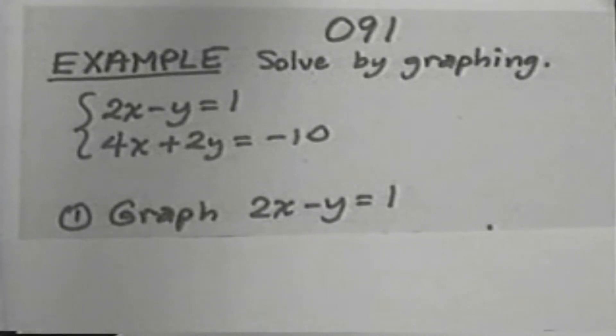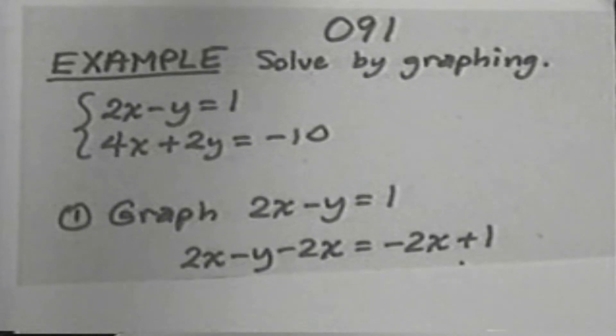Remember that to graph an equation, we need to get y by itself. And so we'll begin by solving this equation for y. To get y by itself, we must remove the 2x from the left-hand side. That means we would subtract 2x from both sides.